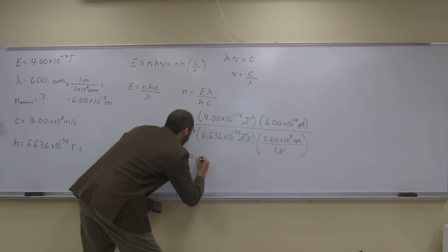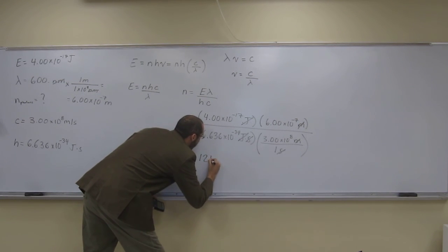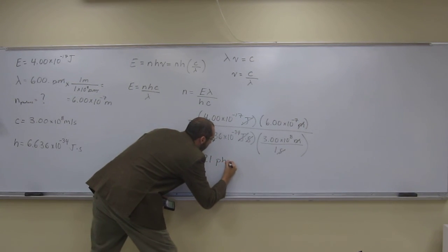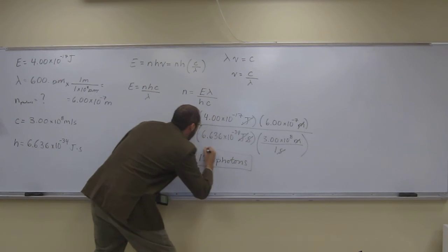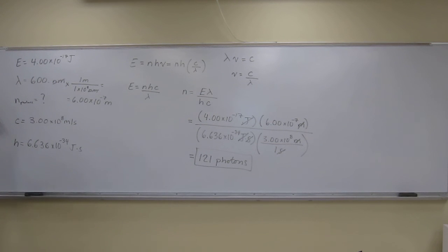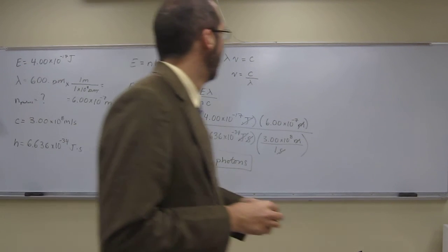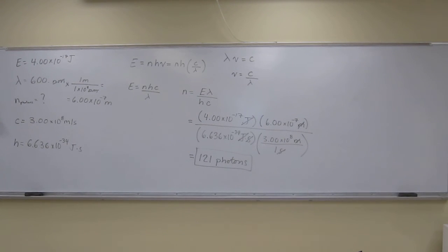And I get, for my answer, one hundred and twenty-one photons. Okay? So, that's three significant figures, because this and that are both three significant figures. Any questions on that one? No. Okay. That's a pretty good problem. It kind of puts a couple of different equations together. Can we kill it? Yes.